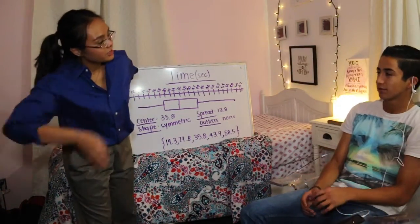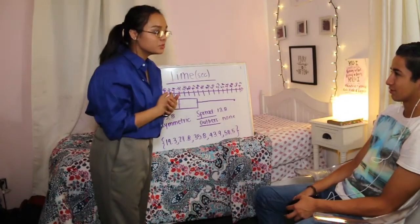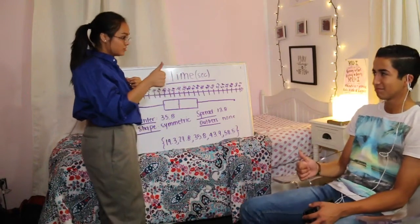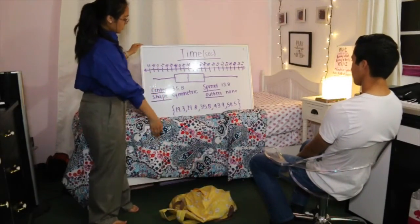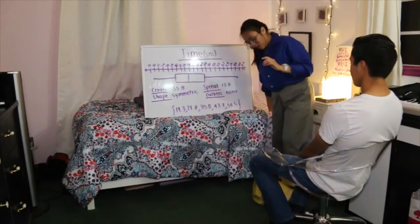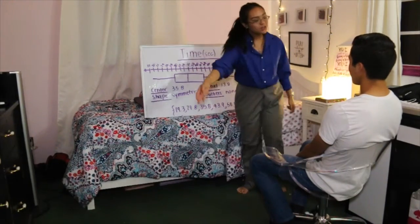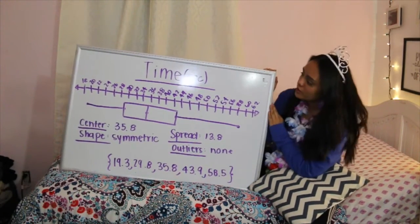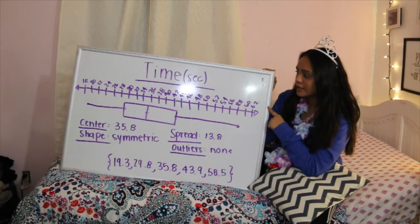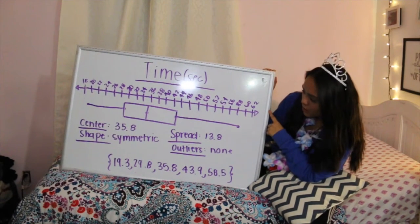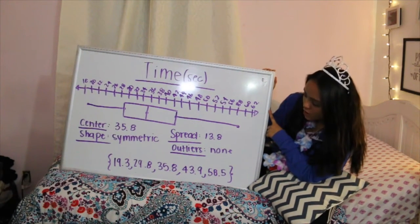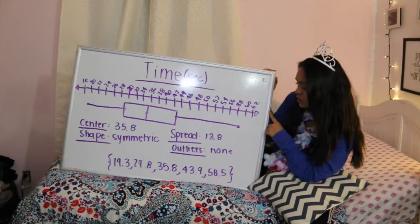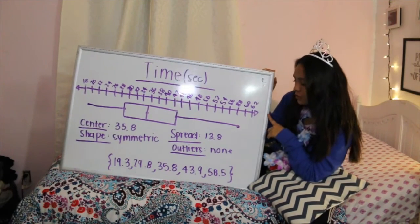Good morning class. There's a 30-to-1 ratio here, so you need to stop talking, please, because you need to listen to me. So this is the graph. So this is our box plot for the time it took to button and unbutton a t-shirt in seconds. It has a center of 35.8. The shape is symmetric, and the spread has an IQR of 13.8 with no outliers or gaps.